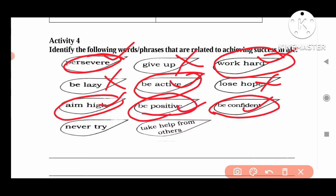'Never try' — if we never try, we do not reach the goal. Try and try again and we reach the goal. So 'never try' is not related to success. 'Take help from others' — yes, if we take help from others, we will reach the goal. These are the words related to achieving success in our life.